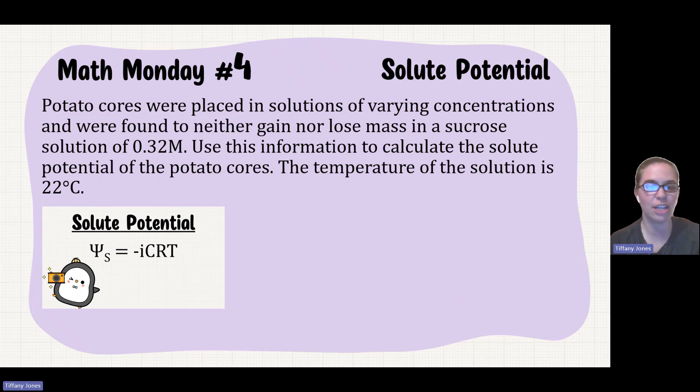Potato cores were placed in solutions of varying concentrations and were found to neither gain nor lose mass in a sucrose solution of 0.32 molar. Use this information to calculate the solute potential of the potato cores. The temperature of the solution is 22 degrees Celsius. So let's first take inventory of what we know.